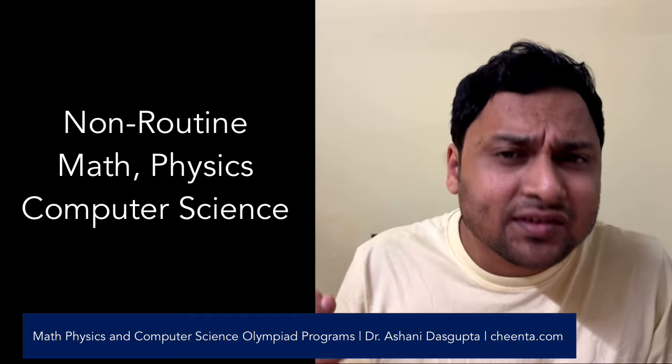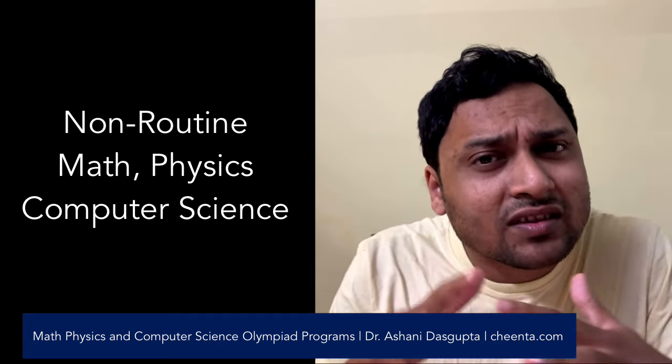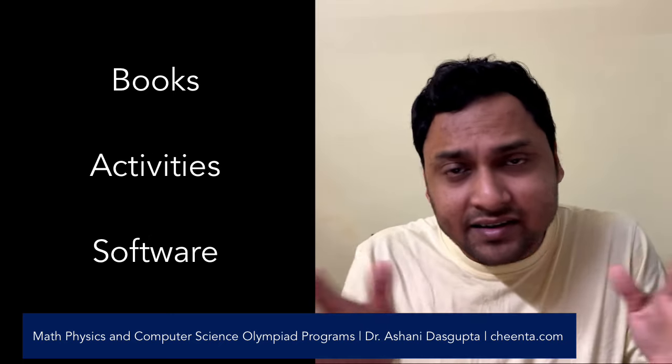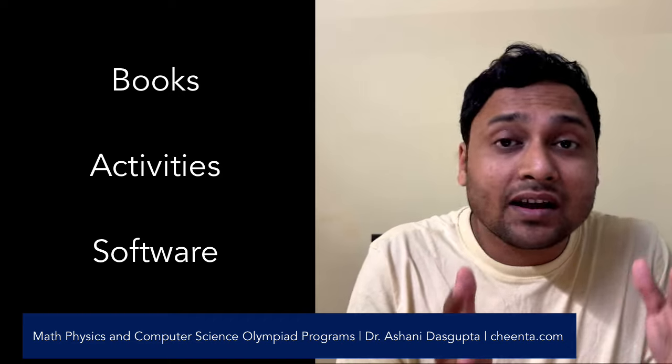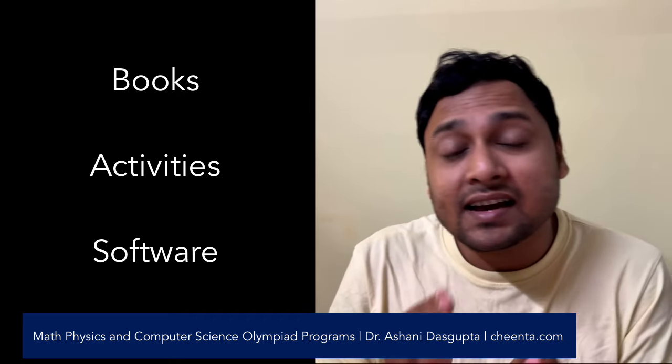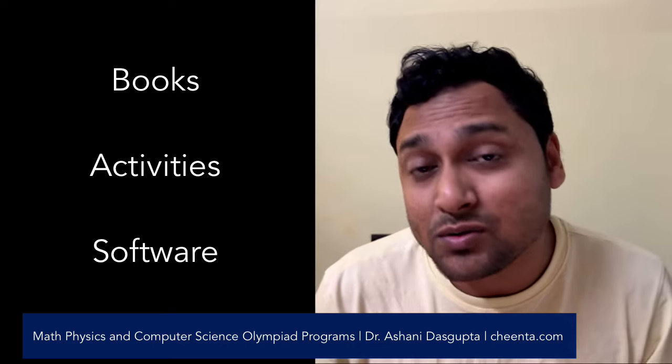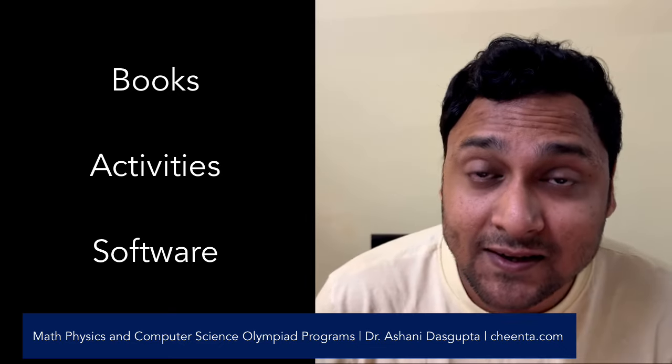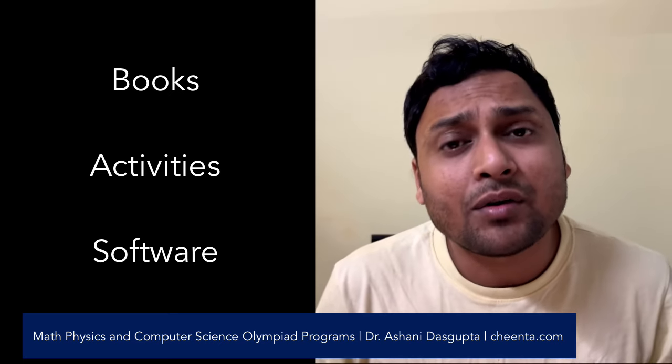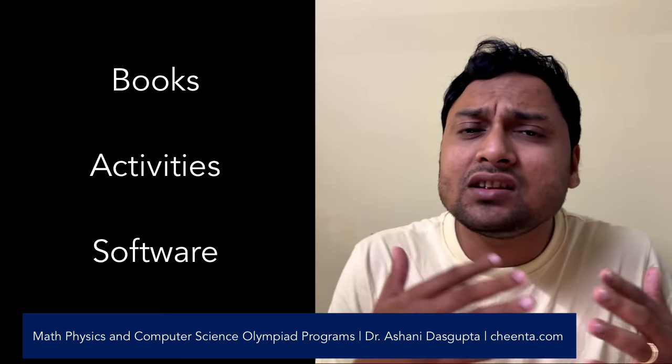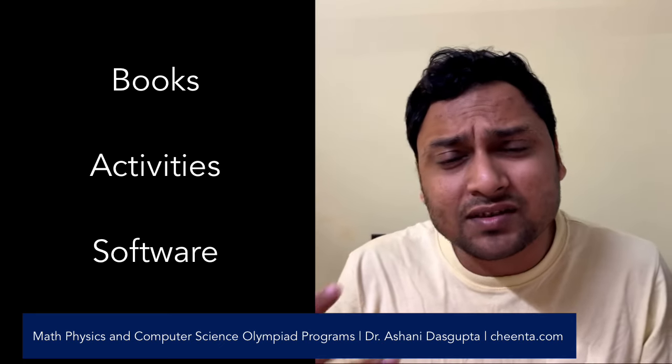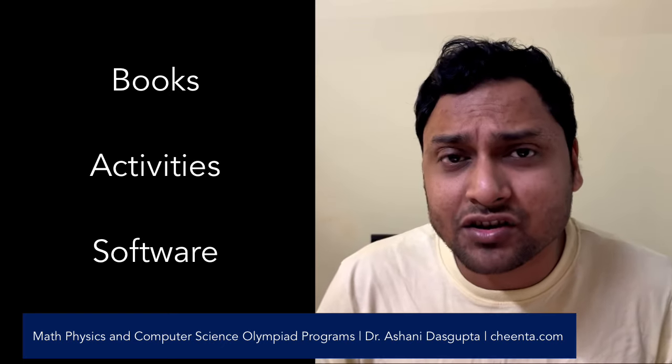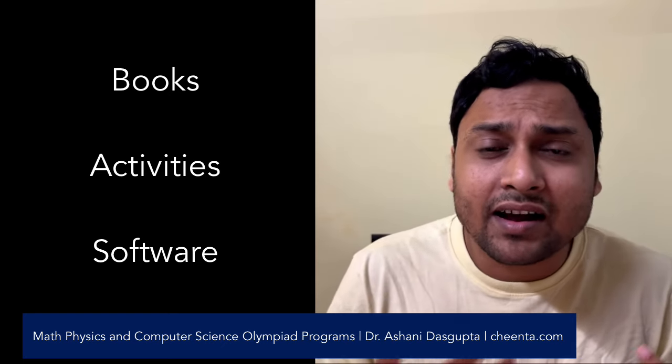Now, there are a lot of resources which focus on this type of mathematical sciences. I have divided broadly into three categories these resources. The first one is books that you can have. The second one are the set of activities that you can actually use. And the third one is the set of softwares and technologies that you can use. At Cheenta, in our Mathematical Olympiad programs, we actually use all three of them. We also use the same in physics and computer science, but very easily you can use them at your home when you are training or helping your own child.